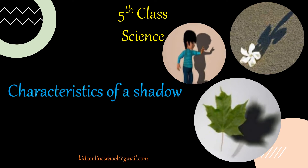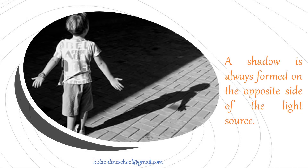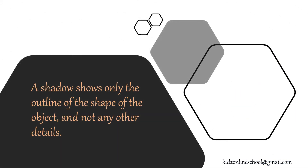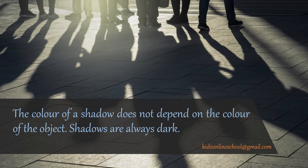Characteristics of a shadow: A shadow is always formed on the opposite side of the light source. A shadow shows only the outline of the shape of the object and not any other details. The color of a shadow does not depend on the color of the object. Shadows are always dark.